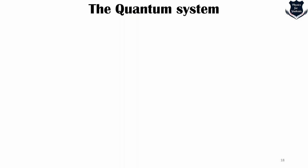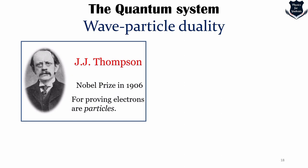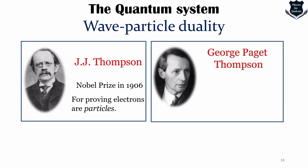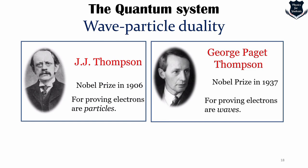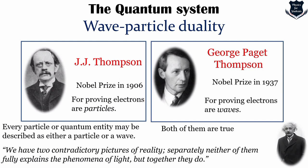Wave-particle duality: J.J. Thomson won the Nobel Prize in 1906 for discovering electrons are particles. His son George P. Thomson also won the Nobel Prize for showing electrons are waves. Both were right — wave-particle duality is a cornerstone of quantum physics. It applies to light as well as electrons. Sometimes it helps to think of light as an electromagnetic wave, other times as photons. As Einstein stated, neither picture alone fully explains the phenomena of light, but together they do.